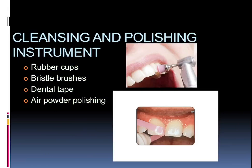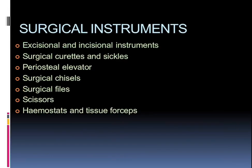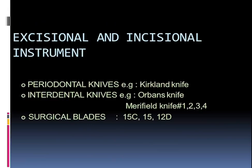Talking about cleansing and polishing instruments: there can be rubber cups, special brushes, dental tape, and air powder polishing mainly consisting of sodium bicarbonate. Talking about surgical instruments: they can be classified as excisional and incisional instruments, surgical curettes and sickles, periosteal elevators, surgical chisels, files, scissors, hemostats, and tissue forceps. The excisional and incisional instruments are periodontal knives, which can be the Kirkland knife and Orban's knife. The periodontal knives used in the interdental area — specifically the Merrifield knife or Orban's knife — are specifically triangular in shape.